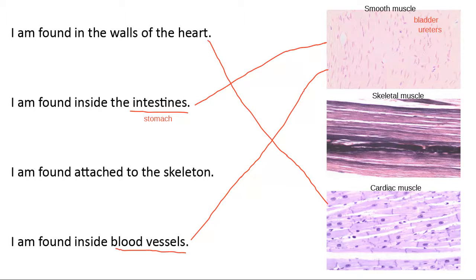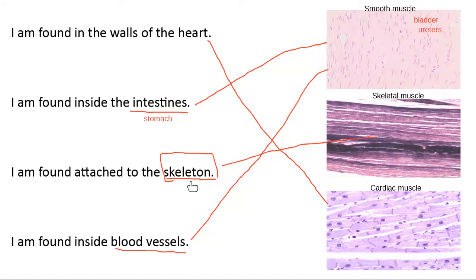Cardiac muscle is only found in one place — the wall of the heart. Skeletal muscle, the easiest to remember, is found attached to the skeleton. The muscles that attach to the skeleton are made out of skeletal muscle tissue. Regarding a question about kidney tubules: to my knowledge they don't have muscle tissue in them — they just have simple cuboidal epithelium lining those tubules.